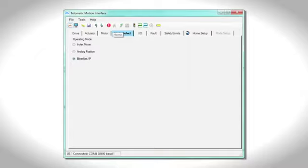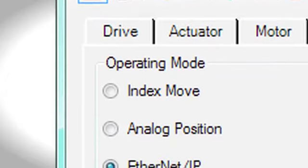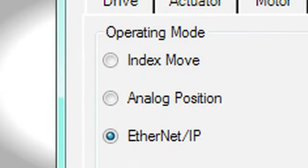The ACS has very easy-to-use operating modes such as index moves, analog position, pneumatic, and Ethernet IP or Modbus TCP connectivity.